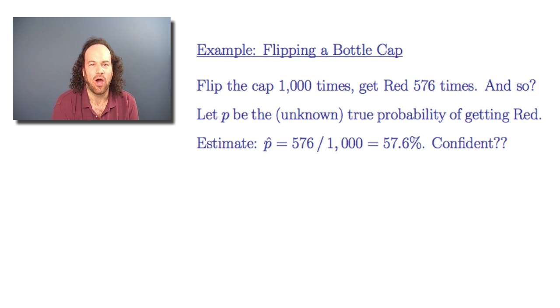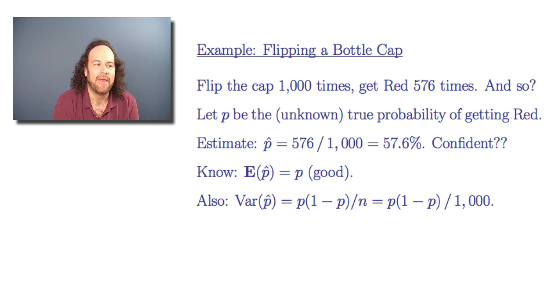We already know that the distribution of p-hat has a mean and a variance. In fact, the mean of p-hat, or expected value, is equal to p, so that's good. The variance of p-hat, we worked that out previously, and that works out to p times 1 minus p, all divided by n, where n is the number of samples, which in this case is a thousand.